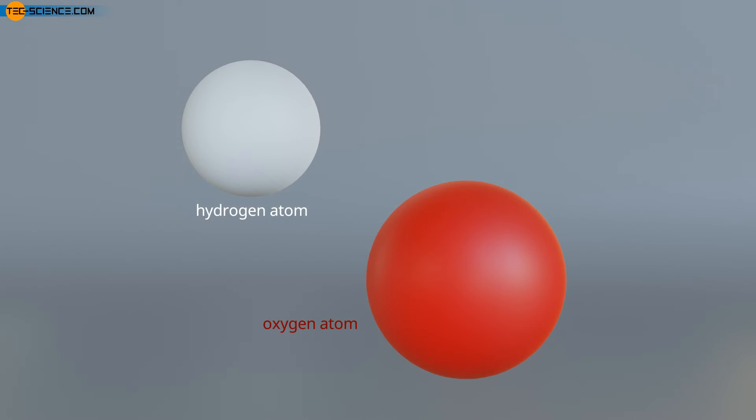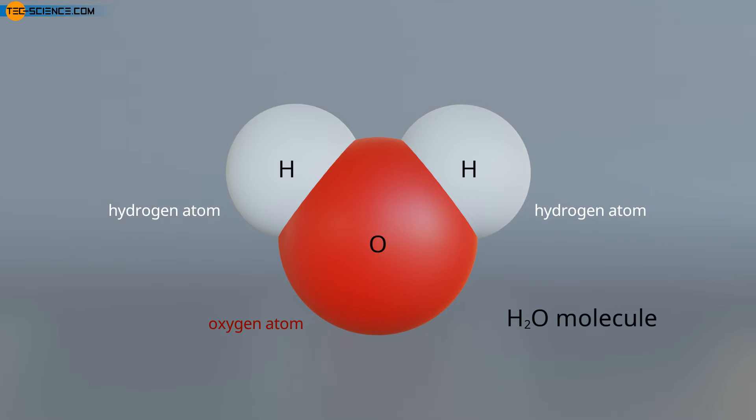For example, water consists of the elements hydrogen and oxygen. In each case, two hydrogen atoms and one oxygen atom join together in order to form a stable H2O molecule.